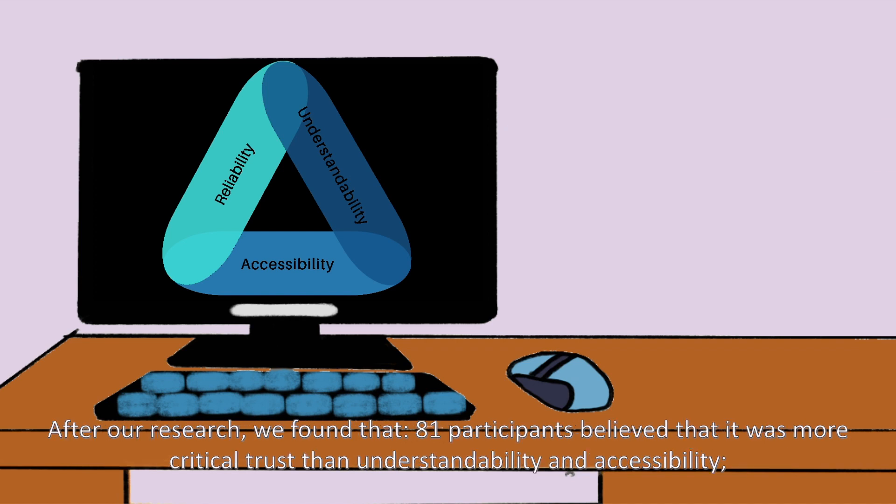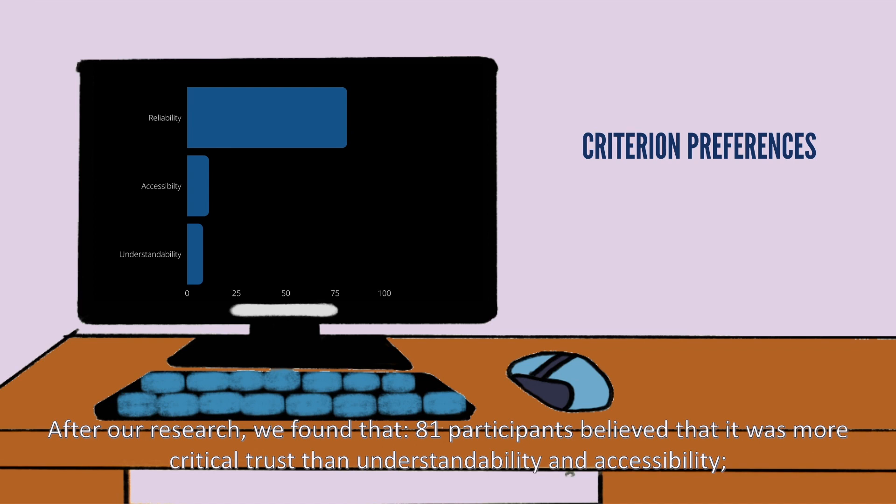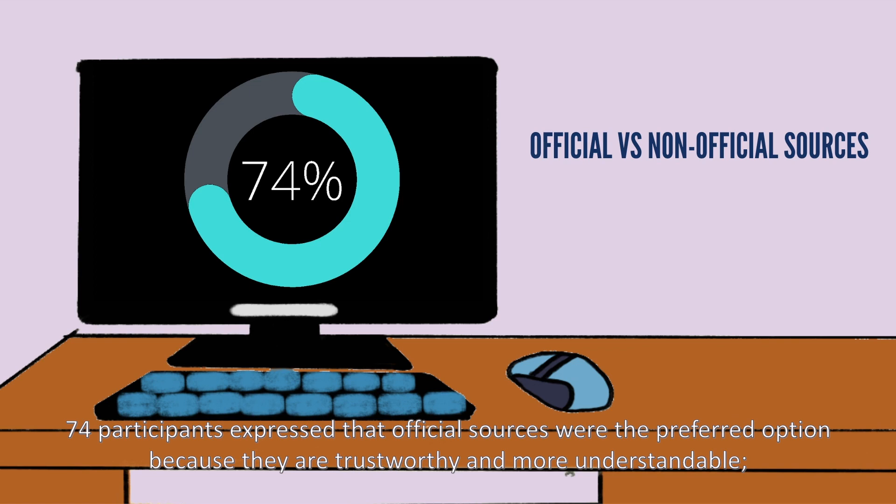After our research we found that 81 participants believed that it was more critical trust than understandability and accessibility. 74 participants expressed that official sources were the preferred option because they are trustworthy and more understandable.